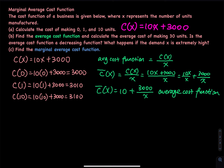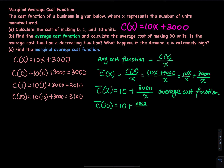Now calculate the average cost of making 30 units. You plug in x = 30: c̄(30) = 10 + 3000/30. Since 3000 divided by 30 equals 100, you add 10 to get $110. That is the average cost of making 30 units.